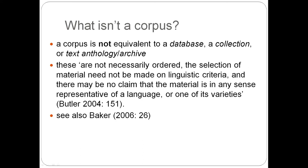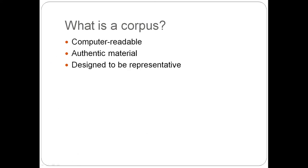But we can use material included in such databases to design a corpus using specific inclusion and exclusion criteria. So in sum, a corpus is a collection of computer-readable semiotic data. The material is authentic — in other words, people have produced it on particular social occasions, although there are debates around what we might mean by authentic. And most importantly, a corpus is representative of a semiotic system and has been designed with that purpose in mind.